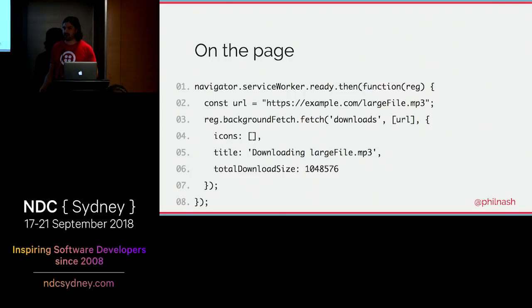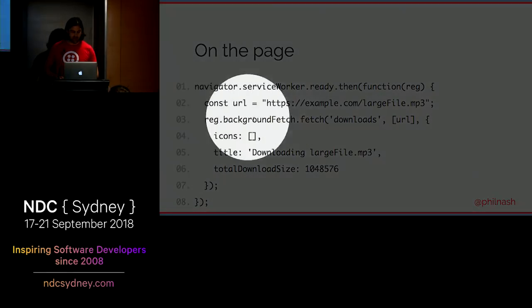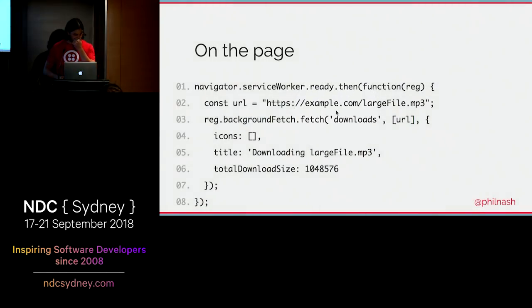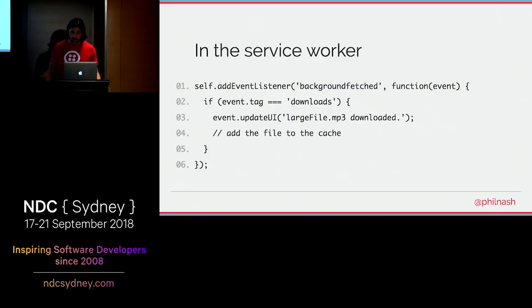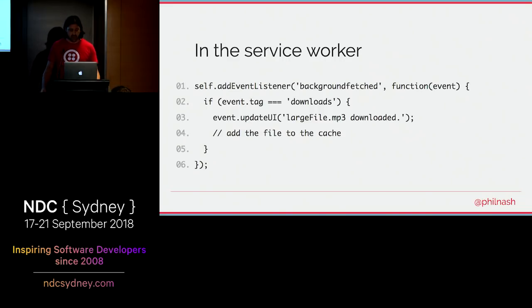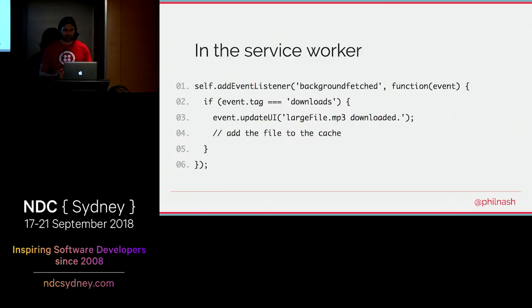It's very similar to how we use the sync and push manager. You get the service worker registration's `backgroundFetchManager` and call `fetch()`, passing a list of URLs and some information like icons and a download size hint for the browser's UI. Then in the service worker we can respond to the success of those files being downloaded — typically by putting them into the service worker cache, so the next time a user wants those large files, they're ready already in the browser.